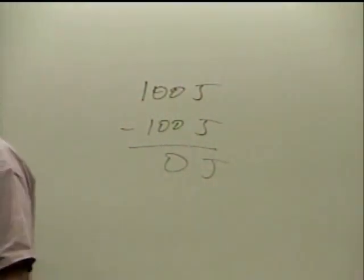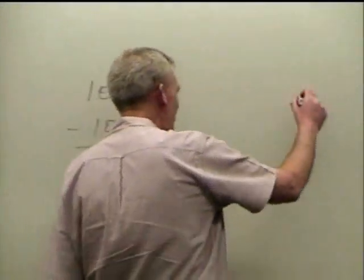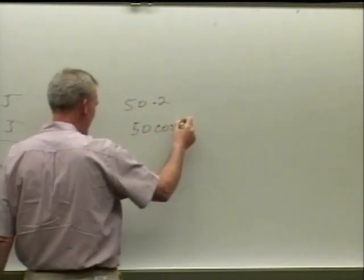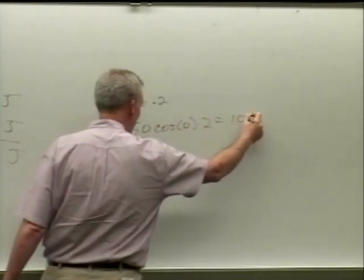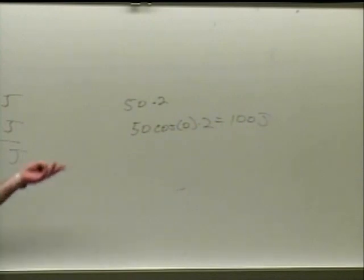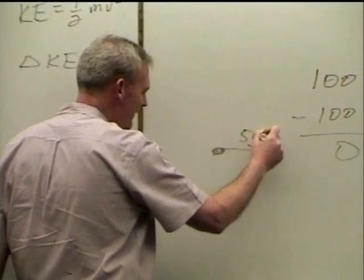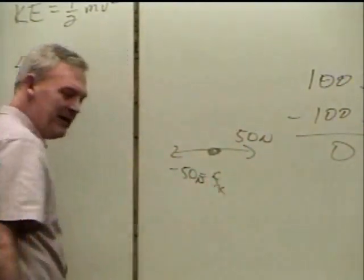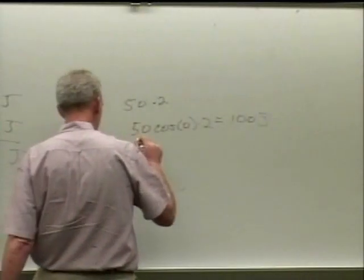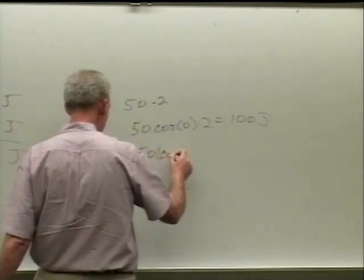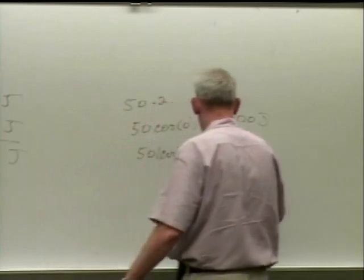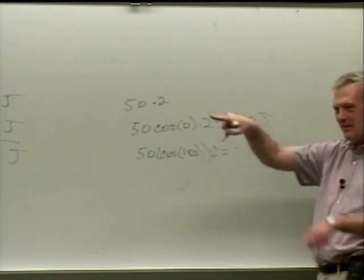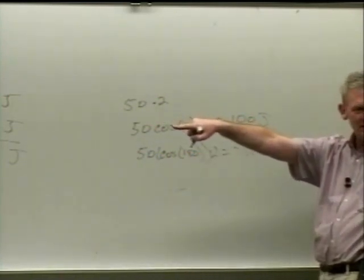Let's say I apply a 50-Newton force for 2 meters. So I'm applying 50 times cosine of zero times 2, which equals 100 joules. Friction, on the other hand, since my free body diagram shows negative 50 Newtons equals my force of kinetic friction, this gives 50 times the cosine of 180 times 2, so friction does negative 100 joules. It's going this way and the displacement's going that way, so it's negative.